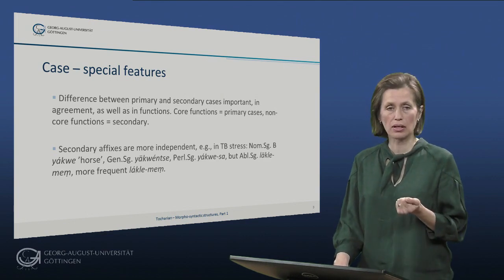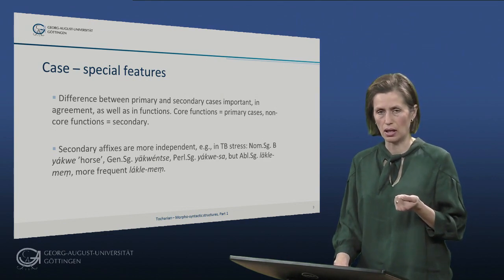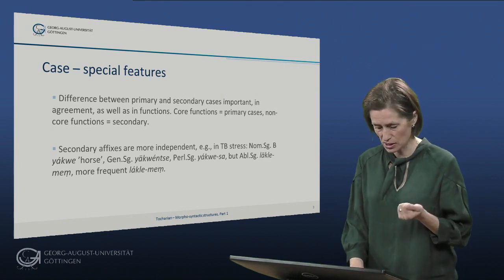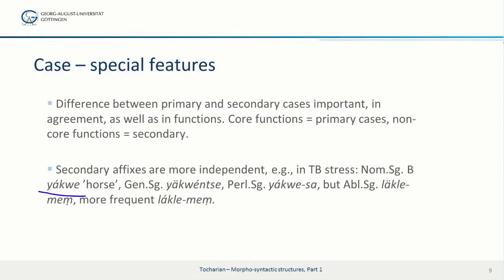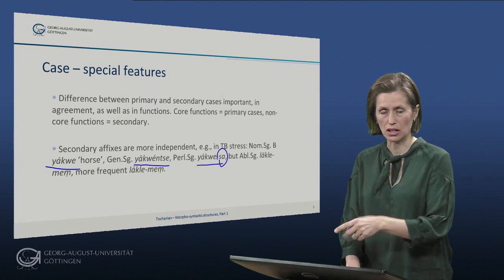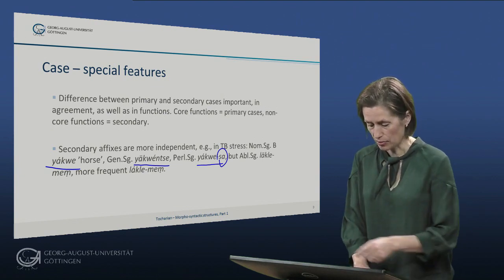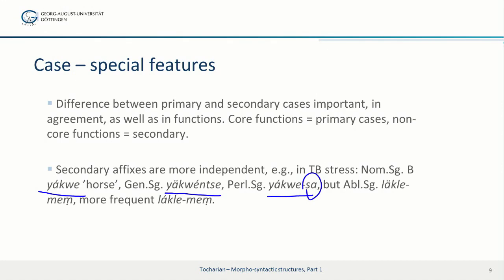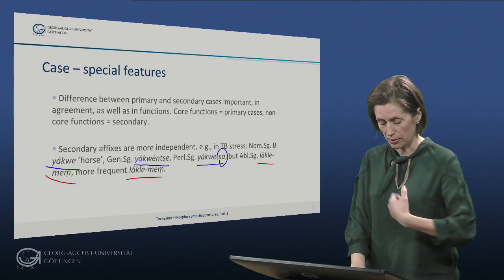An interesting thing is also that secondary affixes are more independent, which is visible for instance in Tocharian B stress. We have the word yäkwe, meaning 'horse,' and in the genitive — a primary case — it is yäkwentse. Whereas in the perlative singular, it is yäkwesa, with the stress on the root, indicating that the case affix here is more free than bound. In the ablative we have both possibilities: for instance läkklemäm, where it behaves like a primary case similar to the genitive, or the more frequent form läkklemäm, where the case affix is more free.